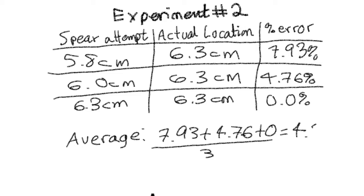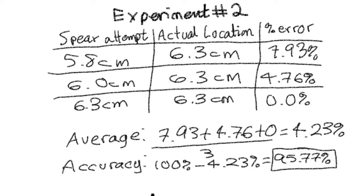Now, if we want to calculate the accuracy, it's as easy as just taking 100% and subtracting my percent error, which was 4.23. What this translates to is that I was about 95.77% on the mark.